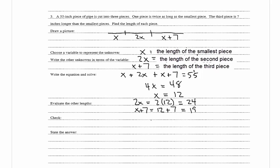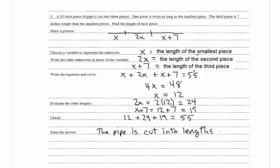Now they want us to check by adding up all the lengths to make sure they equal 55. So 12 plus 24 plus 19 equals 55 — correct. We can state the answer: the pipe is cut into lengths of 12 inches, 24 inches, and 19 inches. And that's our video on applications of linear equations.